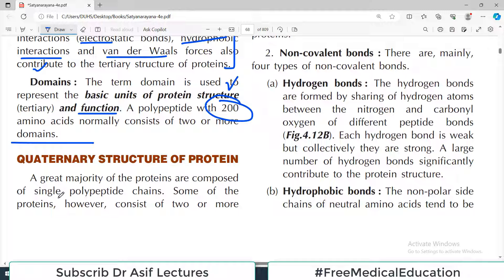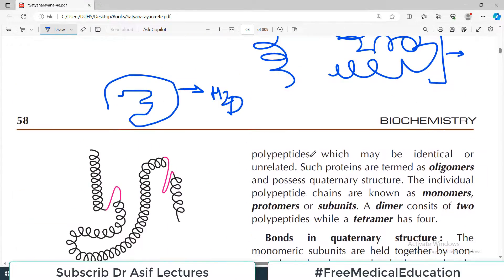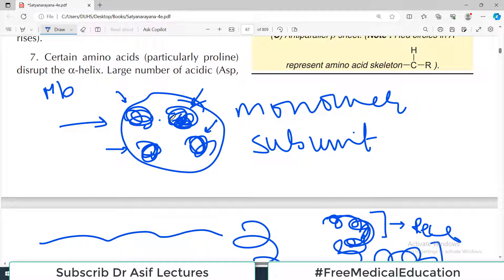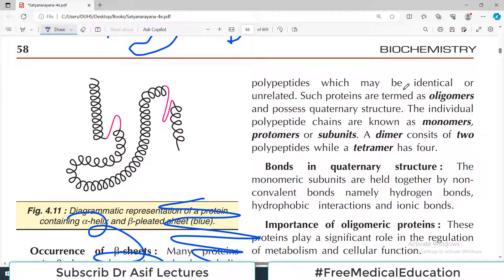A great majority of proteins are composed of single polypeptide chains. Some proteins, however, consist of two or more polypeptides, which may be either identical or unrelated. These four peptide chains can be absolutely unrelated to each other. They may have no relation with each other, they can be different.